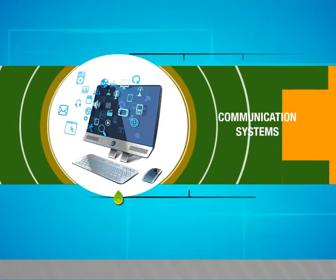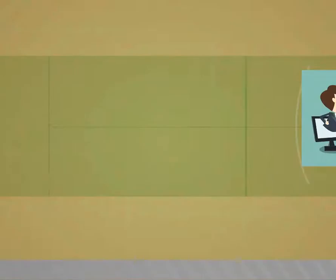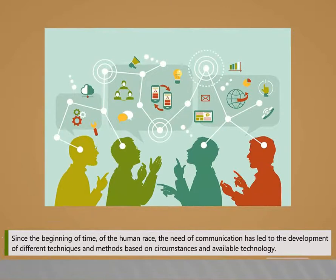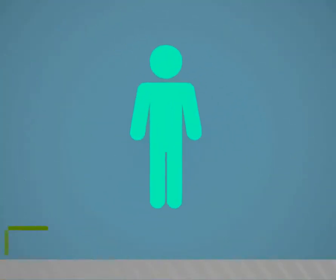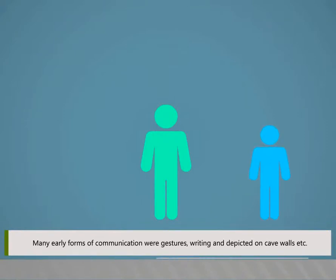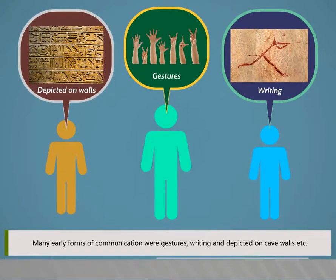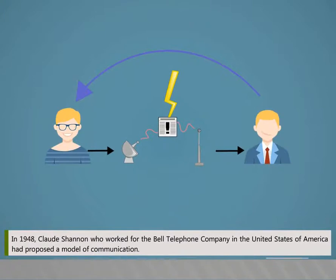Communication Systems. Since the beginning of time of the human race, the need to communicate led to the development of different techniques and methods based on circumstances and available technology. Many early forms of communication were gestures, writing, and depictions on cave walls. In 1948, Claude Shannon, who worked for the Bell Telephone Company in the USA, proposed a model of communication.